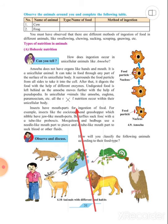Insects have mouth parts for ingestion of food. For example, insects like the cockroach and grasshopper which nibble have jaw-like mouth parts. They have jaw-like mouth parts for eating and they eat by nibbling. Butterflies suck the food with a tube-like proboscis. Proboscis is the tube-like structure present in butterflies which they use to suck food.